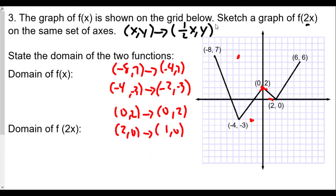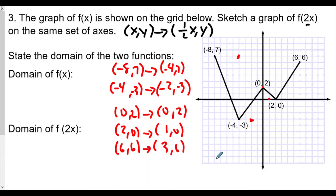Plotting one comma zero right here. Finally, six comma 6: one half of six is three, so three comma 6. Plotting three comma 6 right here. We can see the x values are just half of what they used to be, so f of 2x is a horizontal compression by a factor of two — the distance from the y-axis is half as much as originally.